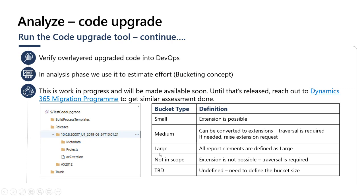Until this bucketing feature is released, if you need access to this categorization, you can reach out to the Dynamics 365 Migration Program. A link is shared that allows you to nominate your customer to get a similar assessment done. Customers coming from DMP would have already received this as part of the standard migration assessment.